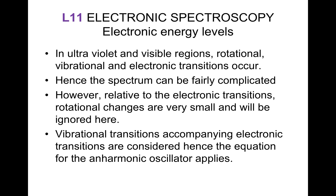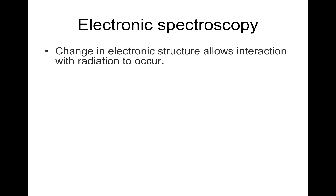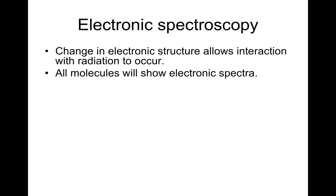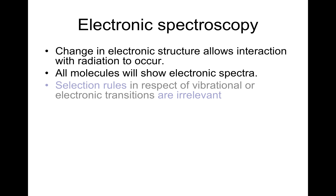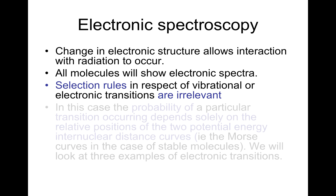Vibrational transitions accompanying electronic transitions are considered, hence the equation for the anharmonic oscillator applies. A change in electronic structure allows interaction with radiation to occur, and all molecules will show an electronic spectrum. Selection rules in respect of vibrational or electronic transitions are irrelevant in this case.